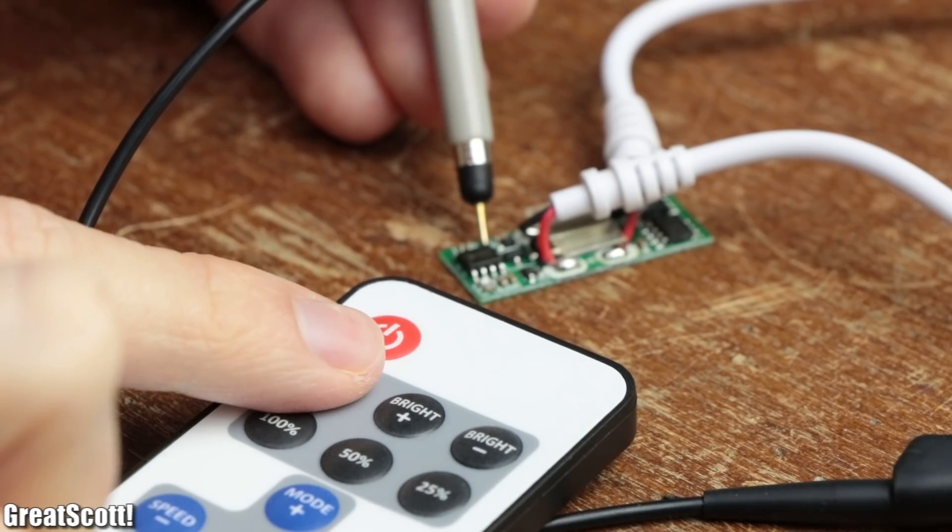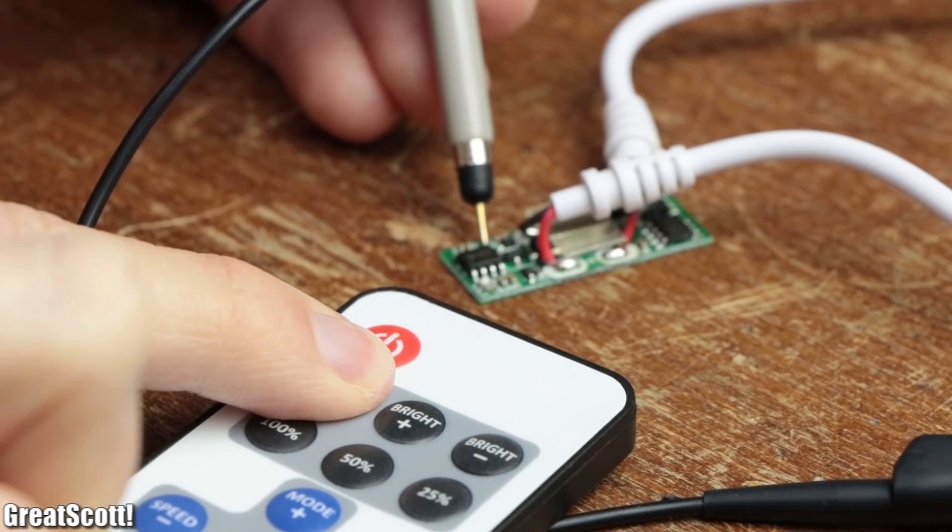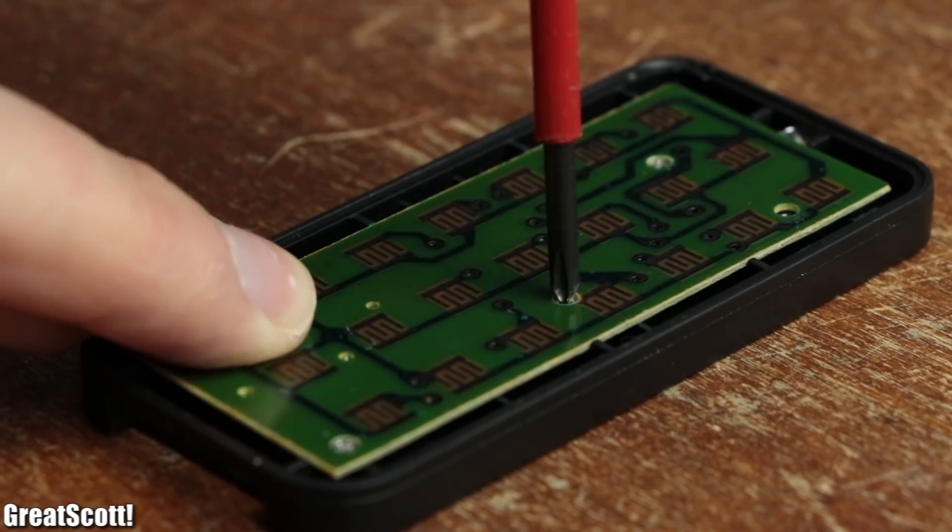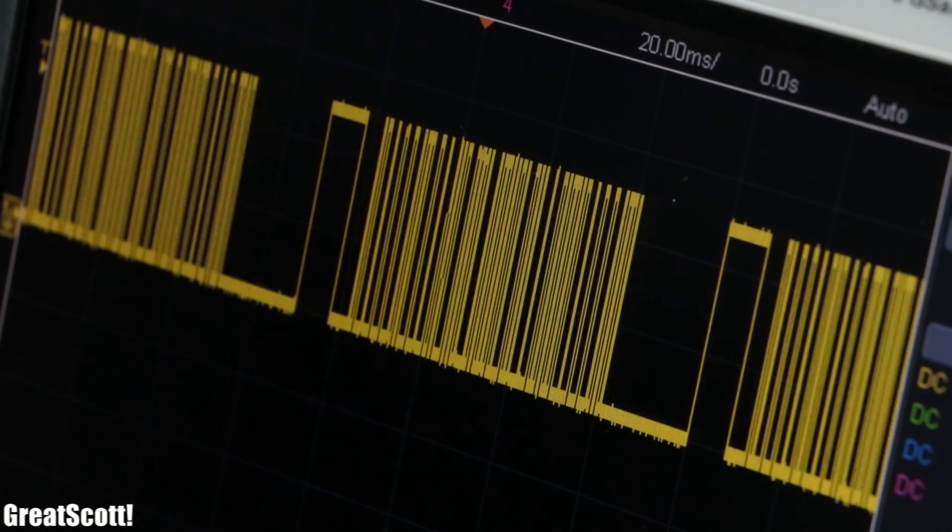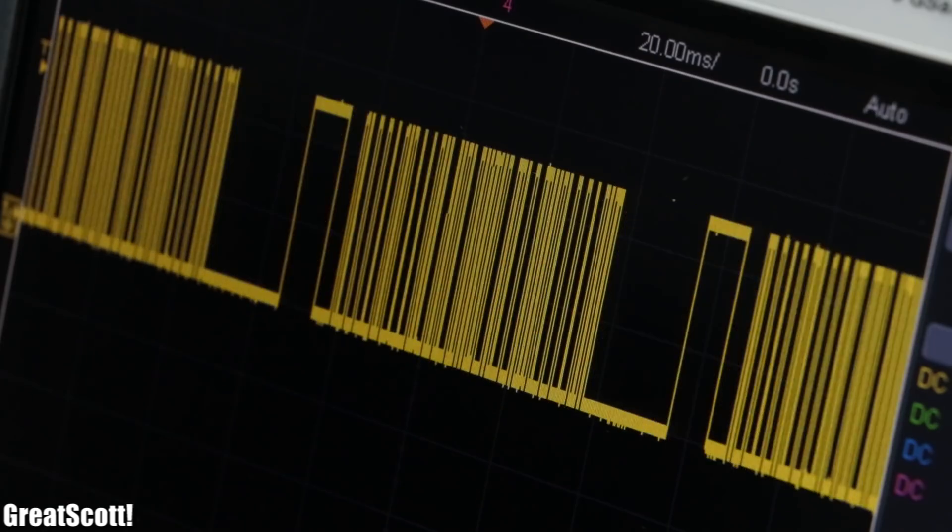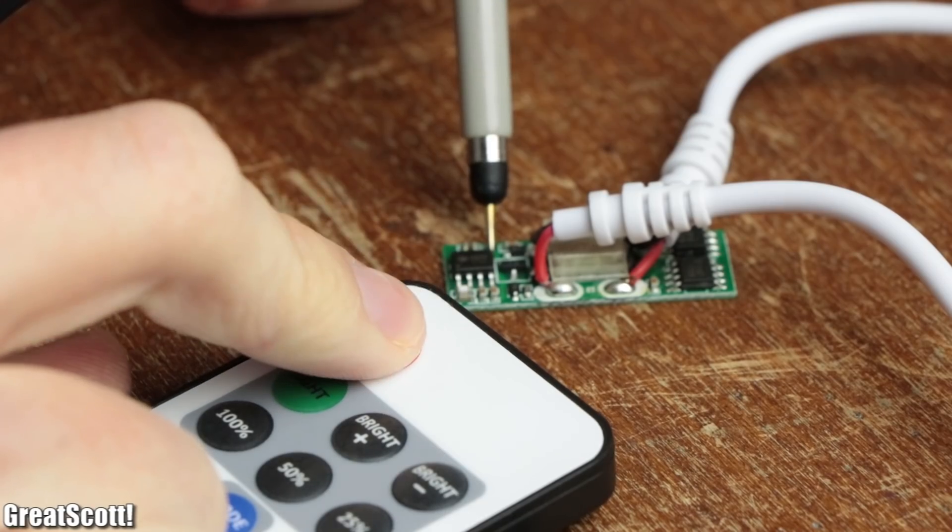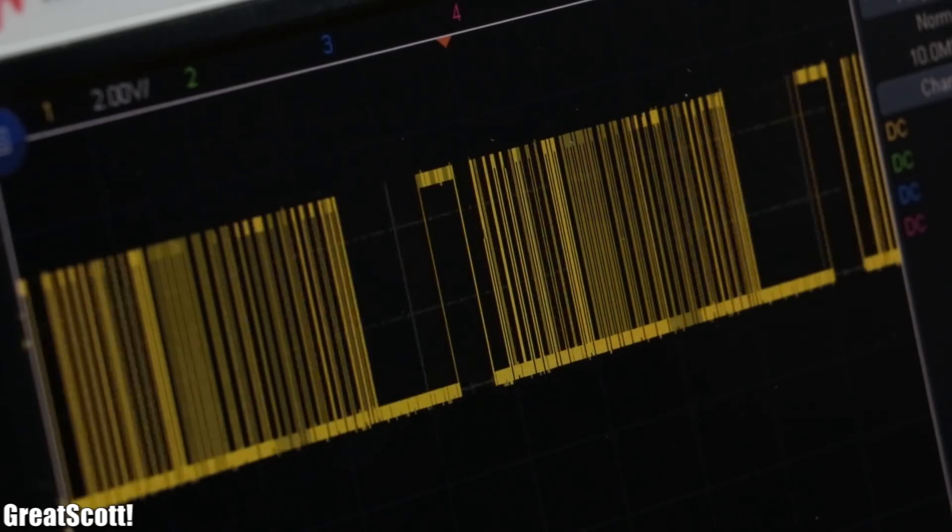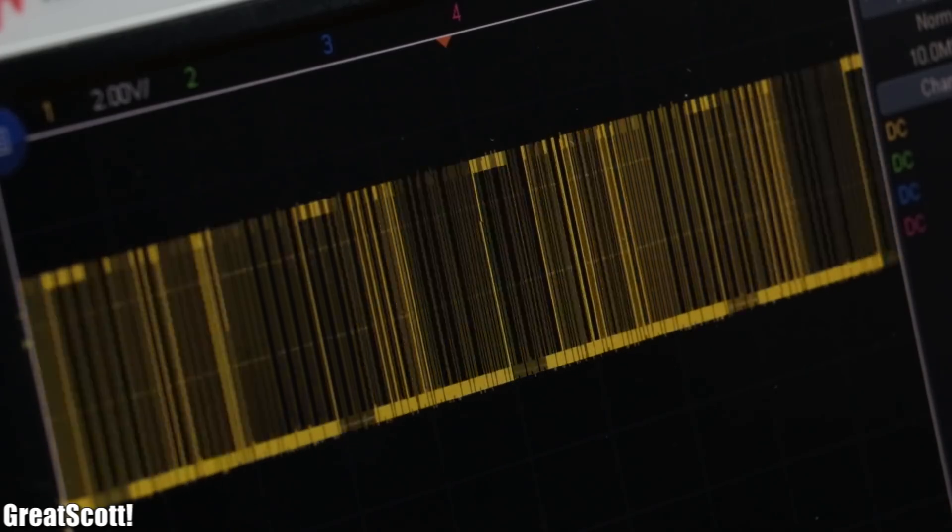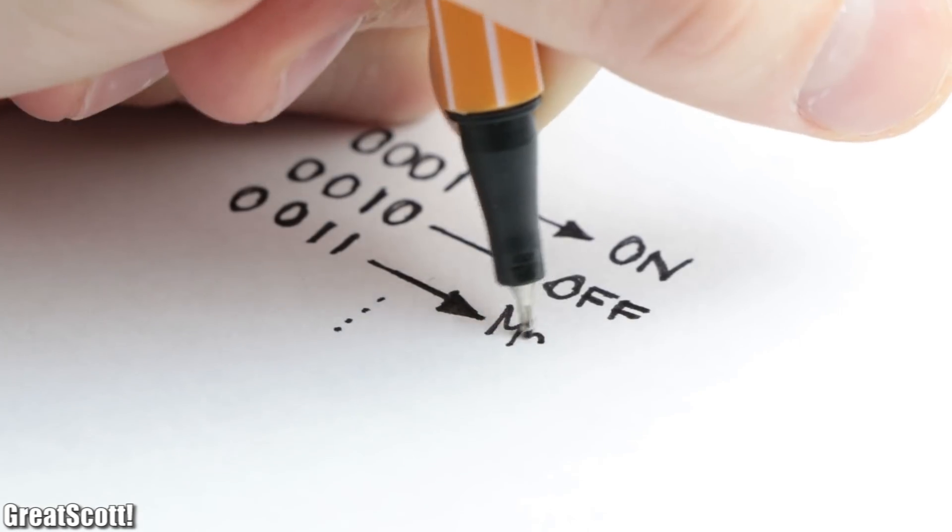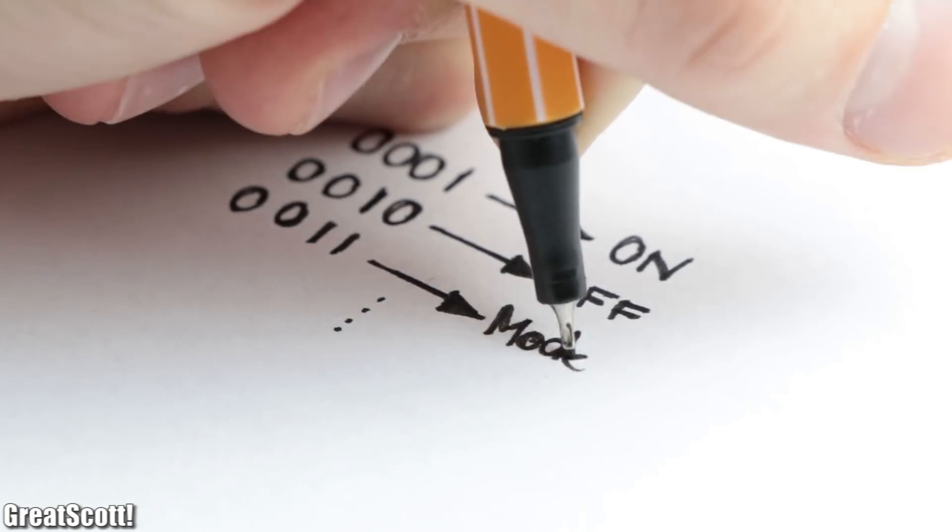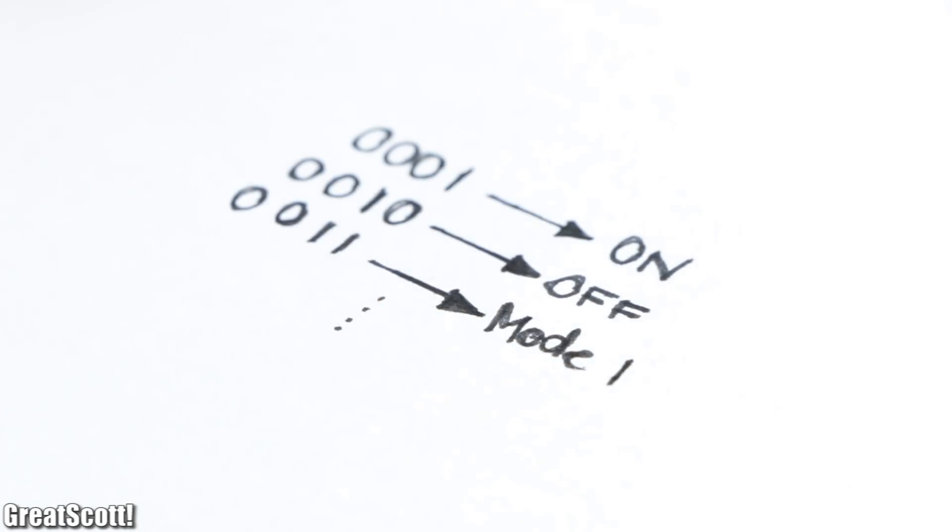As you can see by pushing a button on the RF transmitter which I obviously had to reassemble beforehand we get a decent looking data signal at the receiver's data output. And of course by pushing another button we get a slightly different data signal which is very hard to see on the oscilloscope but obvious because the receiver needs a different identification signal for each button in order to know what it should do.